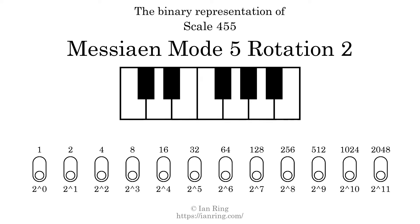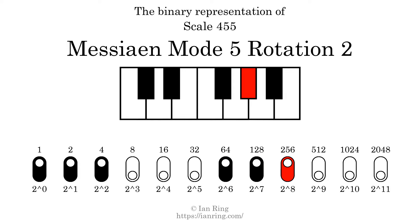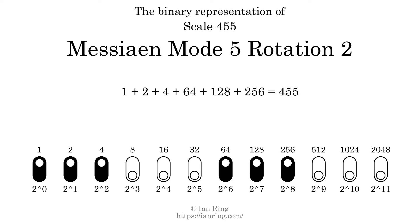The binary representation of this scale is determined by mapping tones of the scale to binary digits. Each binary digit represents a power of 2. To get the scale number, we add the powers of 2 together. The powers of 2 that are present in the scale, all added together, equals 455.